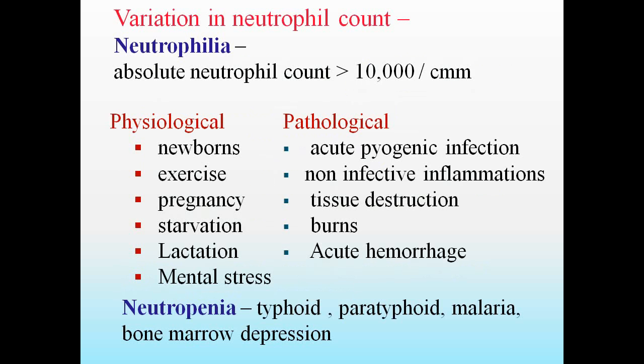Variations in neutrophil count: neutrophilia means the absolute neutrophil count goes beyond 10,000 per cubic millimeter. Physiological causes include newborn, exercise, pregnancy, starvation, lactation, mental stress, etc. Pathological causes include acute pyogenic infection, non-infective inflammations, tissue destruction, burns, acute hemorrhage, etc.